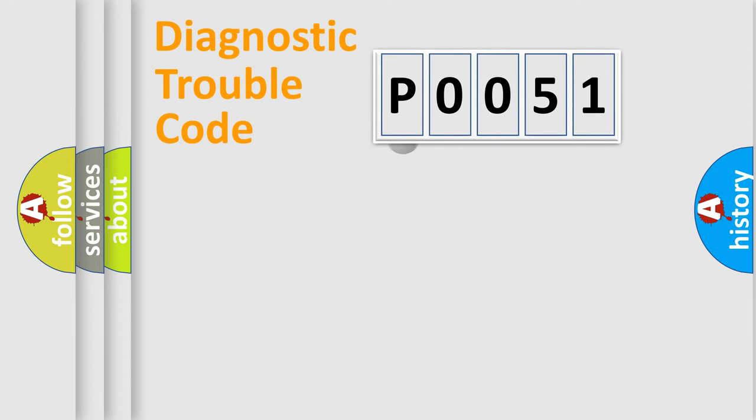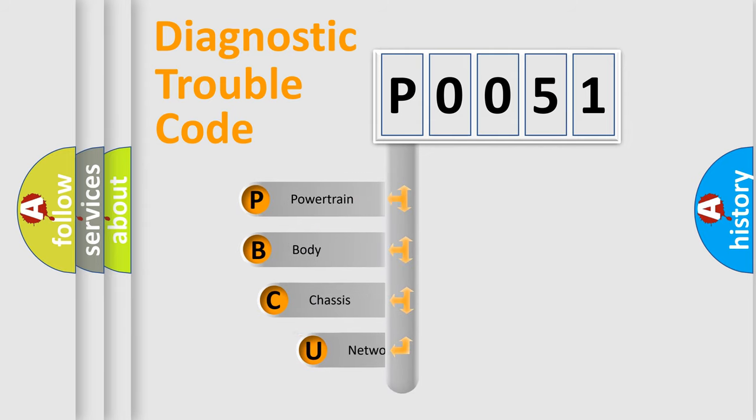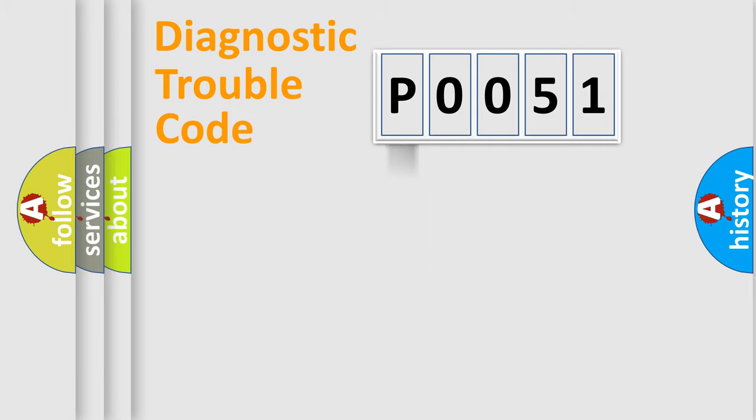First, let's look at the history of diagnostic fault code composition according to the OBD2 protocol, which is unified for all automakers since 2000. We divide the electric system of the automobile into four basic units: Powertrain, Body, Chassis, and Network.